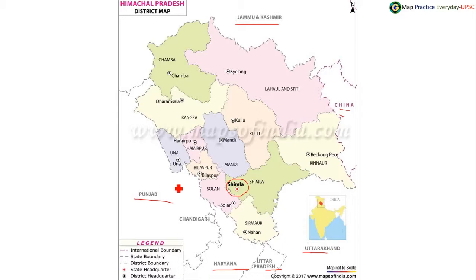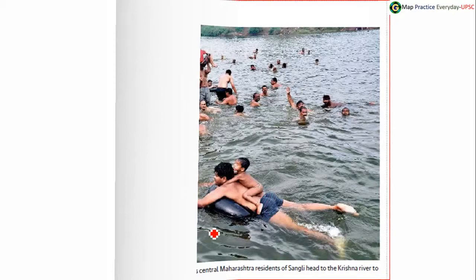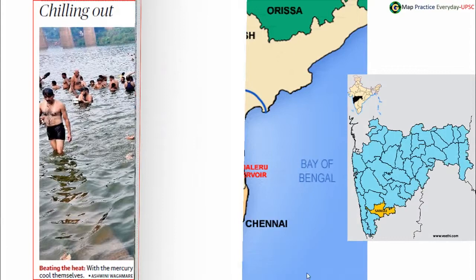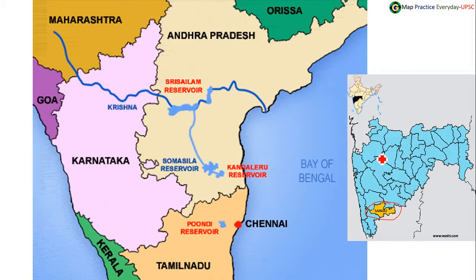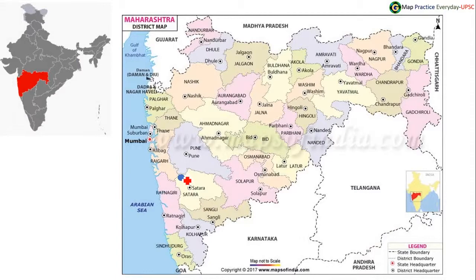Punjab and Haryana have a single capital, that is Chandigarh. And later we saw the Sangli district. Sangli district is located in the southern part of Maharashtra. We saw the course of the Krishna River, in which it originates in Maharashtra, comes through Karnataka, Andhra Pradesh, and terminates in the Bay of Bengal.